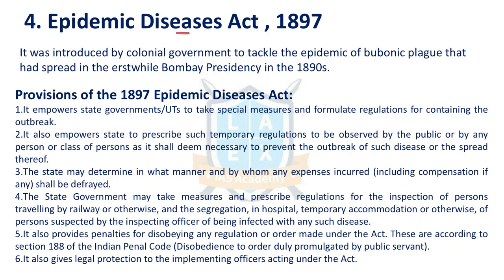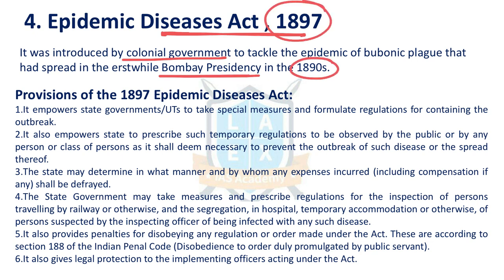The next issue is the Epidemic Diseases Act 1897. Controls were imposed on various activities during lockdowns under this Act. It was introduced by the colonial government during the Bombay plague conditions in the 1890s and passed in 1897. Important provisions include: state governments and union territories can take special measures and formulate regulations to contain an outbreak.